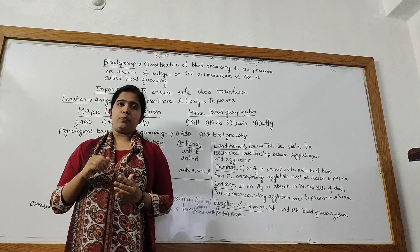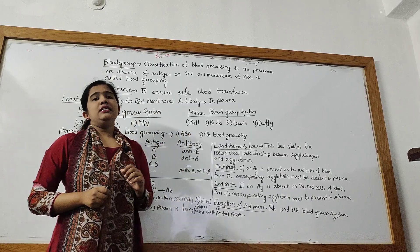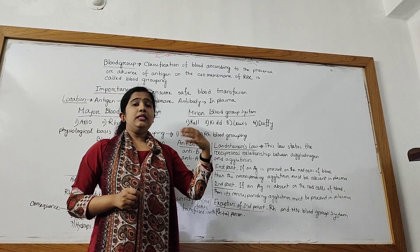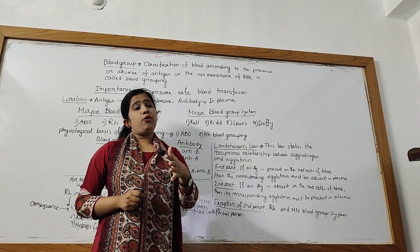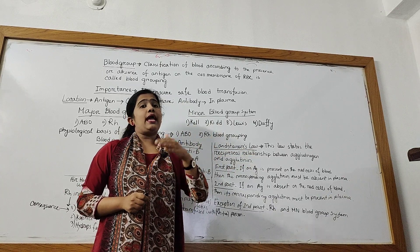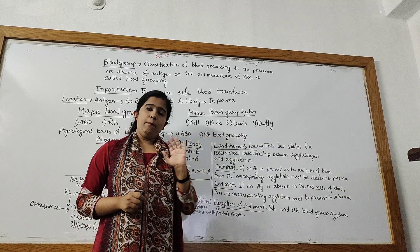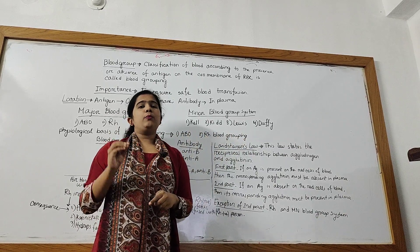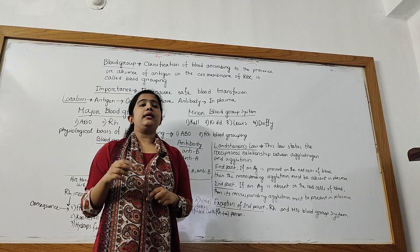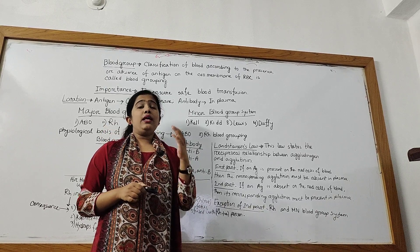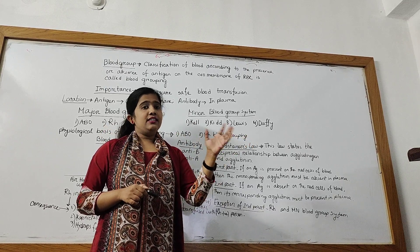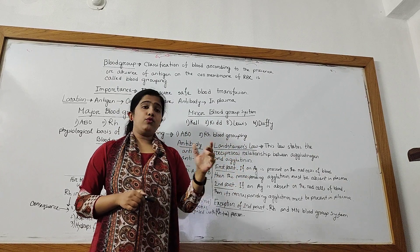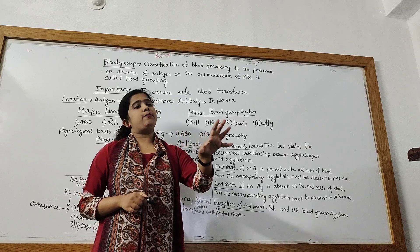There are two parts. First part: if the agglutinogen is present on the RBC membrane, then its corresponding antibody or agglutinin must be absent in the plasma. For example, in blood group A, the RBC membrane has A antigen, so the corresponding anti-A must be absent. Anti-B would be present, but anti-A is absent — the corresponding agglutinin is absent.